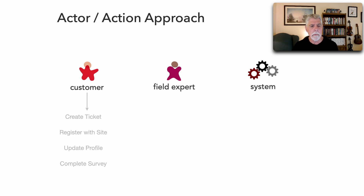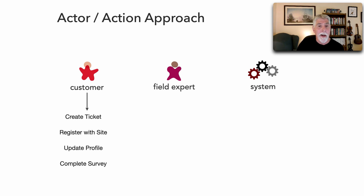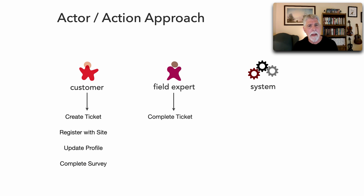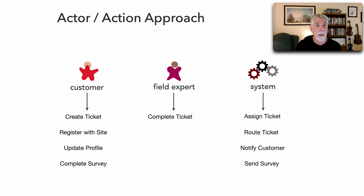Customers can create tickets, they register with the site, they can update and create a profile, they can complete a survey — those sorts of things. For field experts, their primary activity from a system standpoint is to complete tickets. The system itself does a lot on its own: it assigns tickets, locates the right expert in the field, routes the ticket, notifies the customer, and sends the customer a survey.